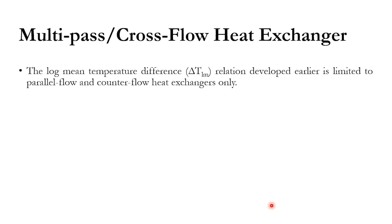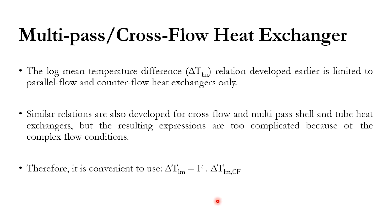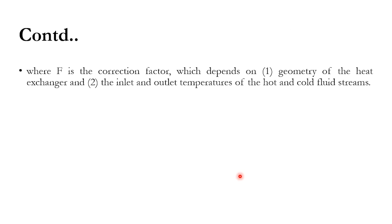Next, we move to multi-pass and cross-flow heat exchangers. The LMTD correlation developed for parallel and counter flow — (ΔT1 − ΔT2) / ln(ΔT1/ΔT2) — is only valid for those configurations. For cross-flow or multi-pass shell-and-tube heat exchangers, this cannot be used directly. Complex correlations exist, but to simplify, we use: ΔTlm = F × ΔTlm,CF, where F is a correction factor and ΔTlm,CF is the log mean temperature difference calculated as if the exchanger were counter-flow.